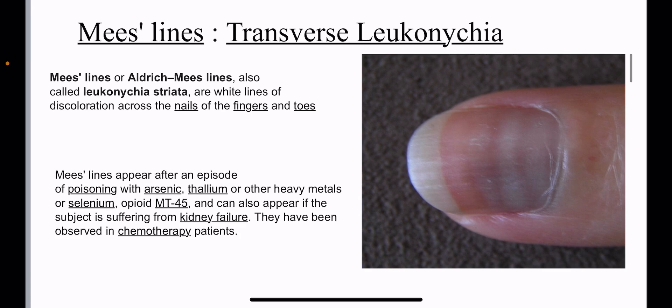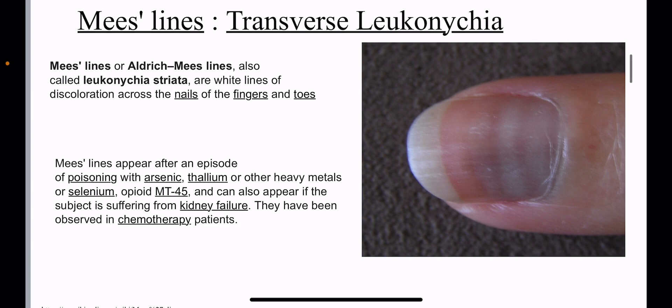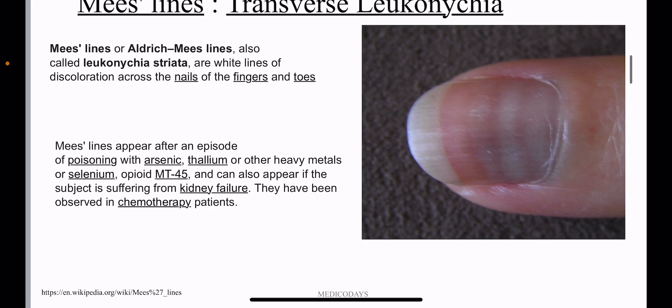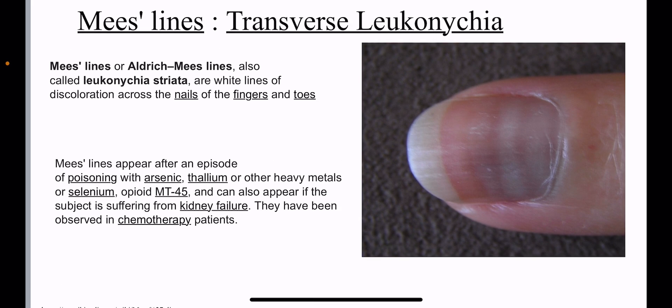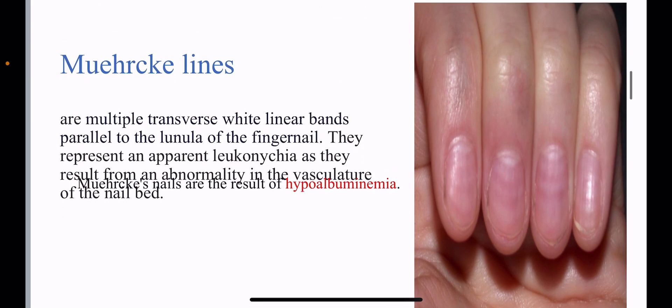Next, a favorite question from forensic medicine is Mees' lines, where there will be transverse leuconychia. Mees' lines, or Aldrich-Mees' lines, also known as leuconychia striata, are white lines of discoloration across the nails of the fingers and toes. They appear after an episode of poisoning with arsenic, thallium, or other heavy metals, or selenium, and also with opioid MT-45. They can also appear in kidney failure and in chemotherapy patients. Most importantly, the association between arsenic and Aldrich-Mees' lines is the most frequently asked.